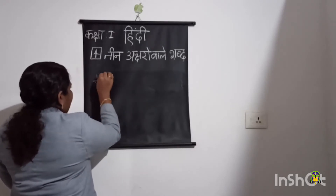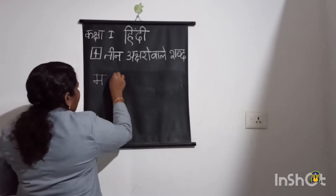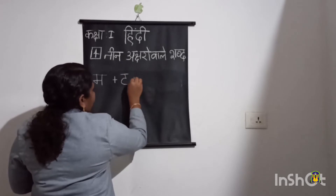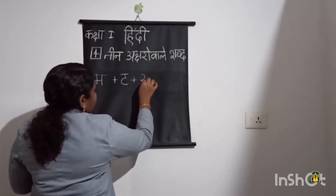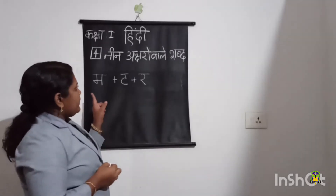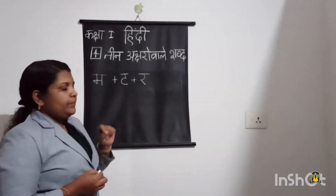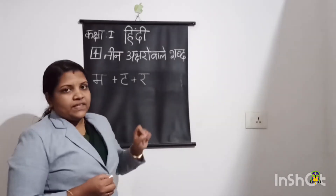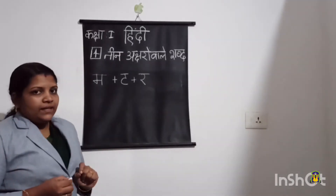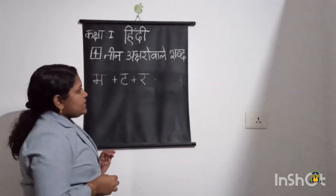So my first letter is Ma. And my second letter is Th. And then the third one is Ra. One, two, three — three letters are here. Then I am going to join these letters. You already know how to join the letters.